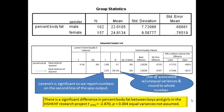Even though we violated the assumption of equal variances, can we trust our results? The answer is yes. We are good with it because of the very large sample size. There is really not much difference in our results between the two lines — the t-scores are fairly equivalent. You would have seen a big difference between these two lines had we had very small sample sizes. So we feel good about our results even though we had to violate one of the assumptions.